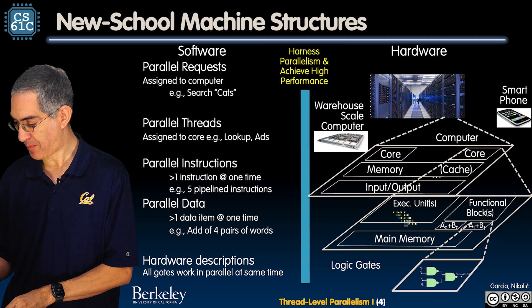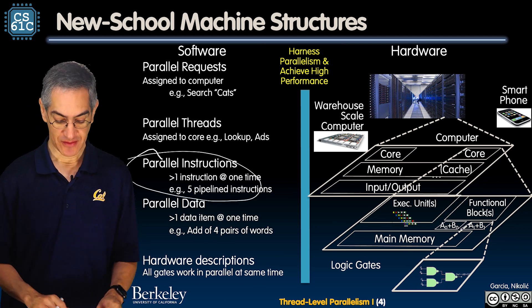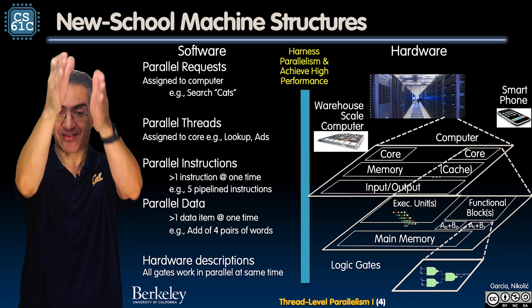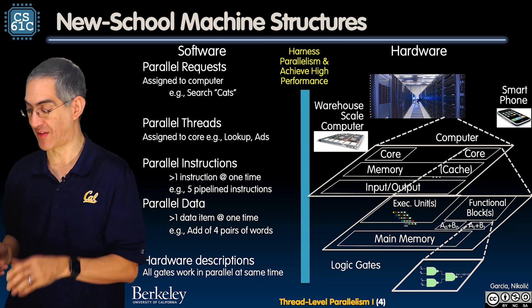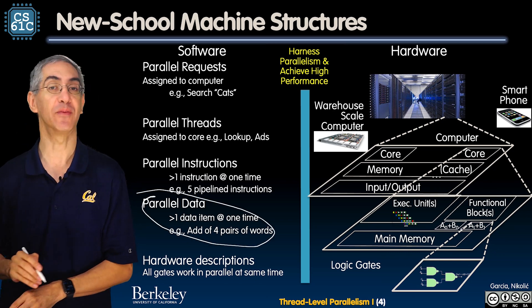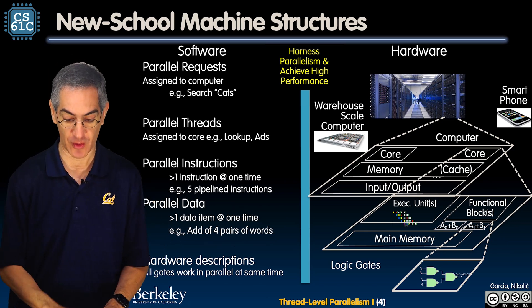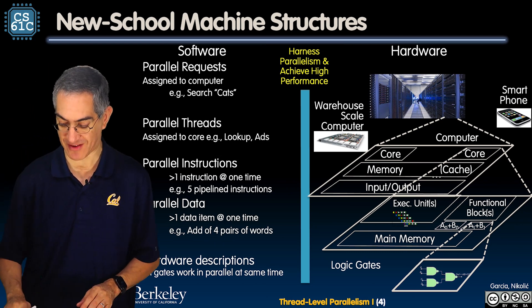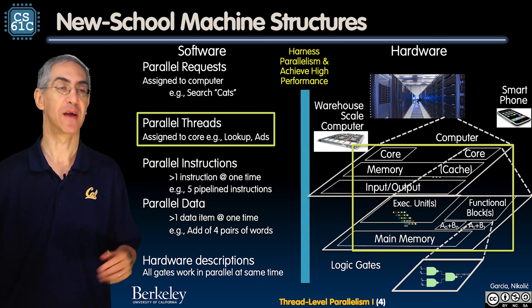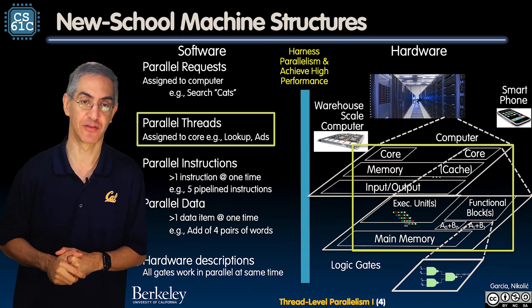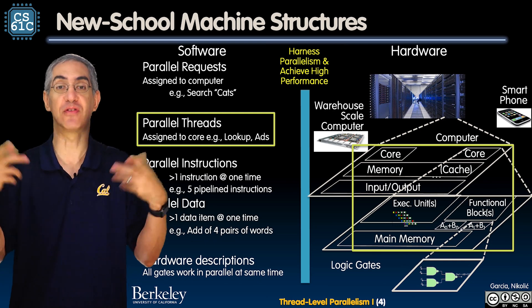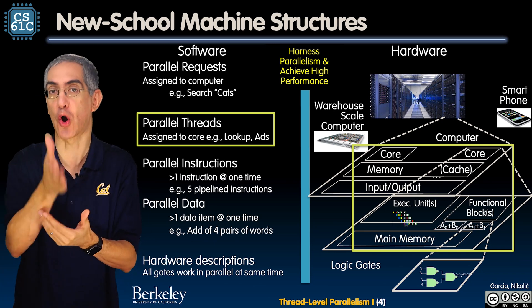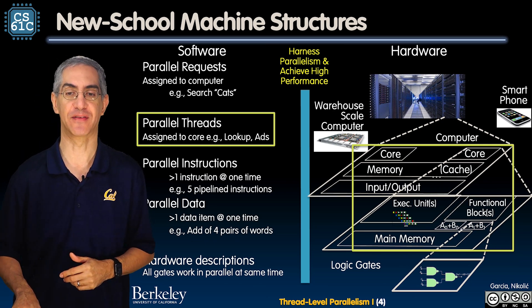Parallel data was about SIMD — can we go wide with our vectors? Can you add four vectors in one clock cycle? The next couple of lectures are about parallel threads, and this lecture in particular is about thread level parallelism. How could you have different cores, each of them working on different threads? What are the architectures? What's required from the architecture point of view to make that work? That's all covered this lecture and the next few.